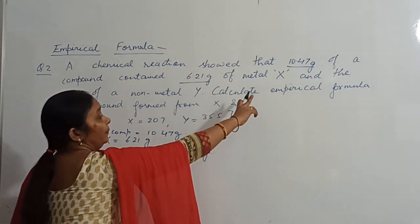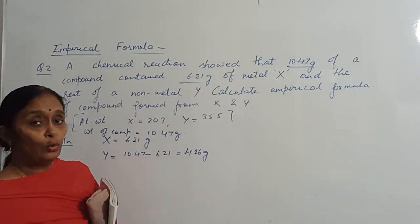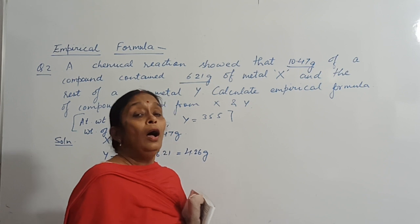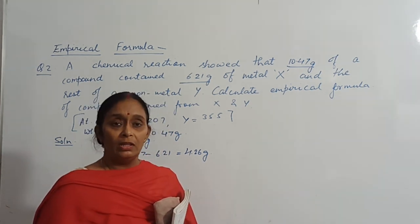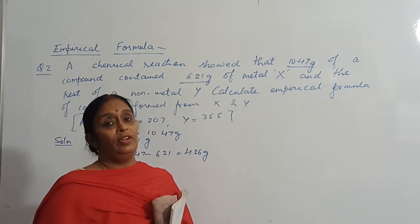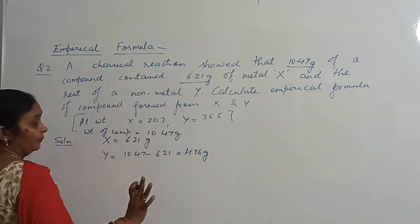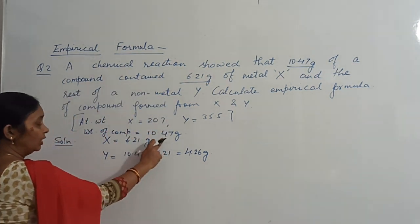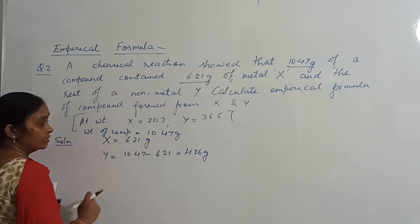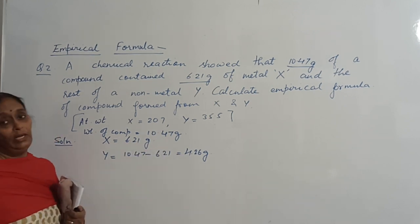Now here in this question, you have to calculate the empirical formula. Last time I told you that in empirical formula, in the question you will be given the percentages of various elements. But here the percentages of the elements are not given. You have been given the total weight of the compound and weights of the various elements. You have to calculate the percentage.